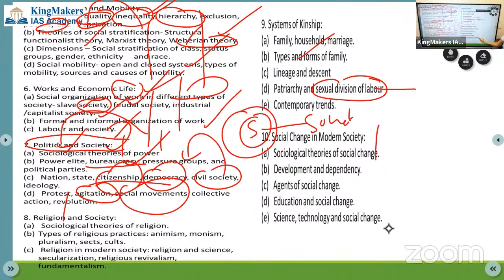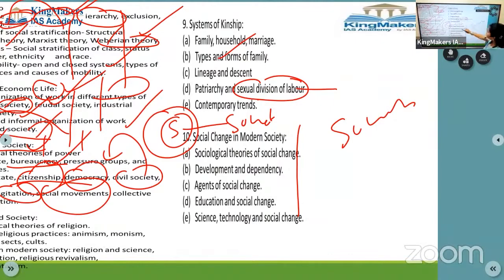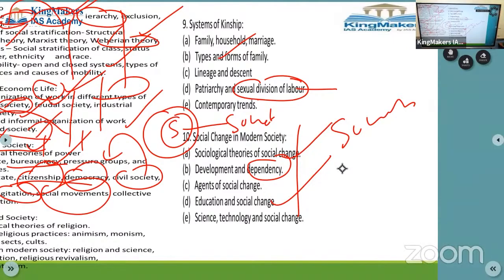Last chapter is social change - after all this, how society changes. You won't realize what type of changes are there compared to 10 years back, and maybe 10 years ahead changes will be very high. How is development happening, how education is a social change. As a collector, as an IPS officer, as an IES officer, you are going to promote this - this is the work you are going to do.